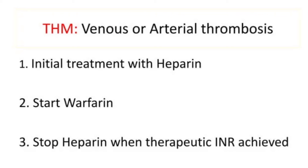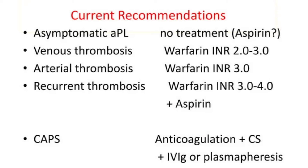Take-home messages: For APS diagnosis, initiate heparin and start warfarin; stop heparin when therapeutic INR is achieved. Asymptomatic patients require no treatment. Target INR is 2–3 for venous thrombosis, 3 for arterial thrombosis, and 3–4 for recurrent thrombosis. Aspirin may be added for refractory cases. For catastrophic APS, use full anticoagulation with corticosteroids and plasma exchange or intravenous immunoglobulin.